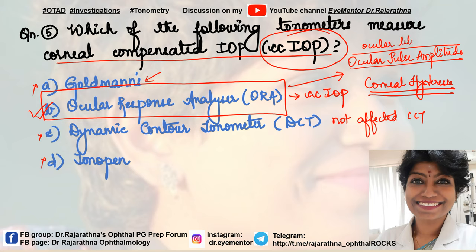So three things learned about ORA today: corneal compensated IOP, corneal hysteresis, and ocular pulse amplitude. I hope you've learned something new about tonometers today. The next set of questions will be on my Facebook group, Instagram channel, and Telegram group, and the discussion as usual will be on my YouTube channel. All the best!